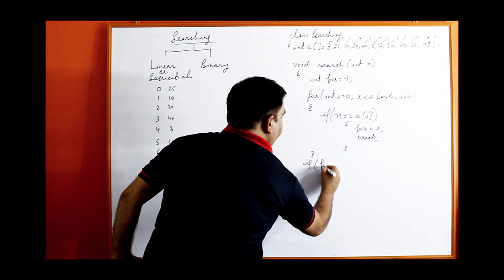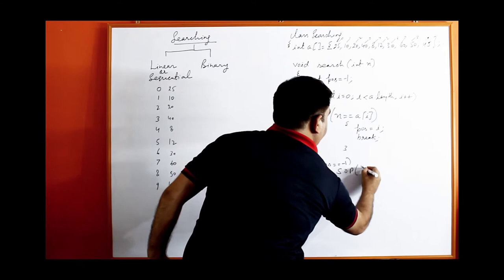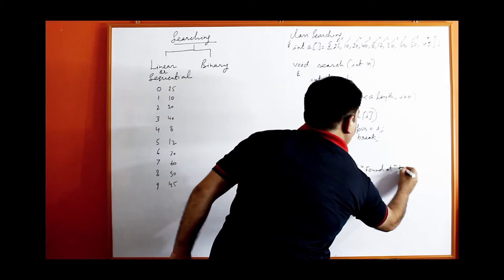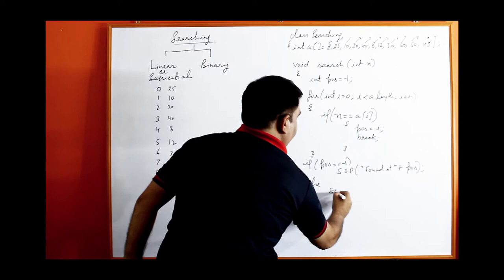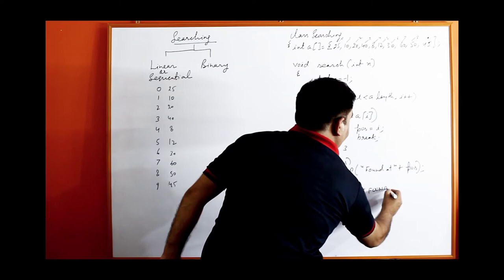Out of the loop, after the loop, you can check the value of pos. If pos equals minus 1, print the message 'found at index' — whatever index is stored in pos — else print the message 'not found' or 'does not exist'.